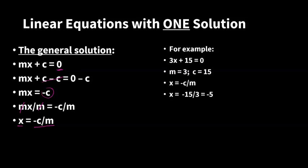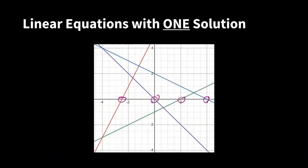This is our general solution. Once we have the format y equals mx plus c, we can simply take c and m to get the solution directly: x equals minus c divided by m. Let's check the earlier example: 3x plus 15 equals 0, so m equals 3 and c equals 15. The solution is x equals minus 15 divided by 3, which equals minus 5. This works every time.